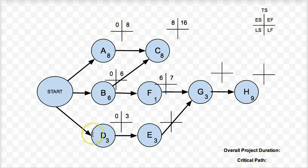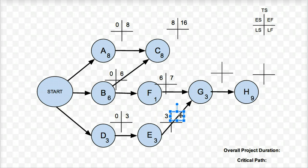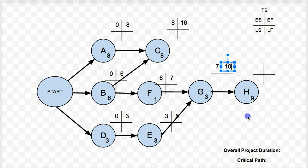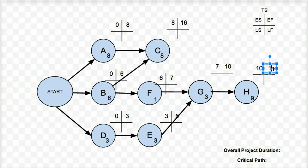Task E is dependent on D only, so the earliest possible start that E can have is at day three, and it takes three days, so three plus three is six. G has two precedent tasks, so again I'm going to take the largest early finish from each of those tasks — that's day seven from task F. G has to wait for F to finish before it can start, so the earliest possible start is day seven; seven plus three is ten. And H is just dependent on G, so the earliest possible start it can have is day ten, and the earliest possible finish is day nineteen.